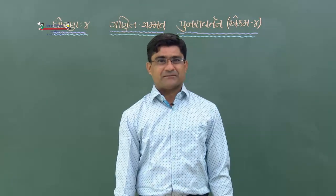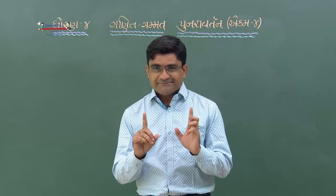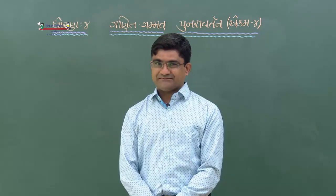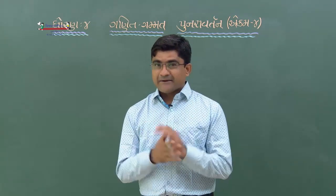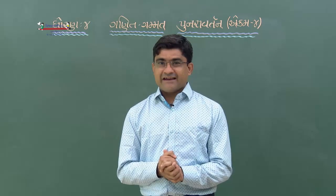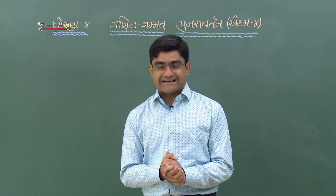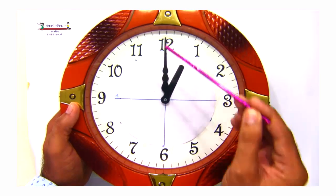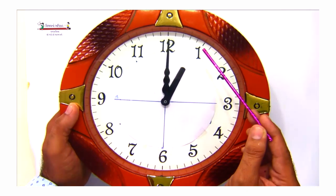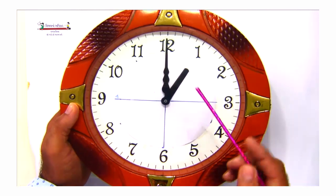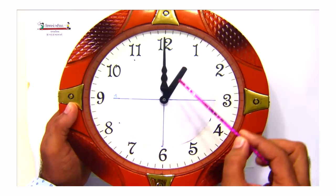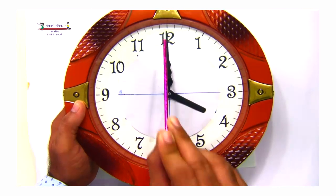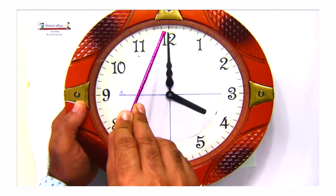તો બે જ મિનિટ થાય છે. ઘડિયાળ જોતા શીખી ગયા છો - ત્યારે બાર પર હોય ત્યારે કલાક કાંટો જ્યાં પર હોય એટલા વાગ્યા કહેવાય. જો હાલ મિનિટ કાંટો બાર પર છે, અને કલાક કાંટો ચાર પર છે, એટલે ચાર વાગ્યા છે એમ કહેવાય.